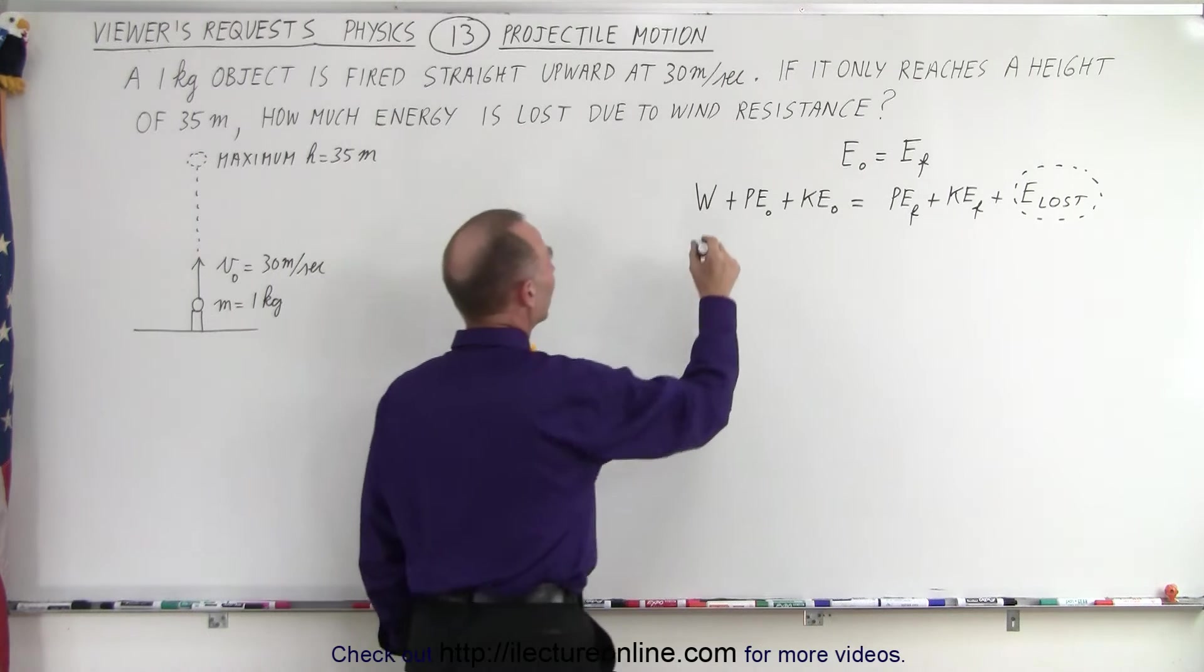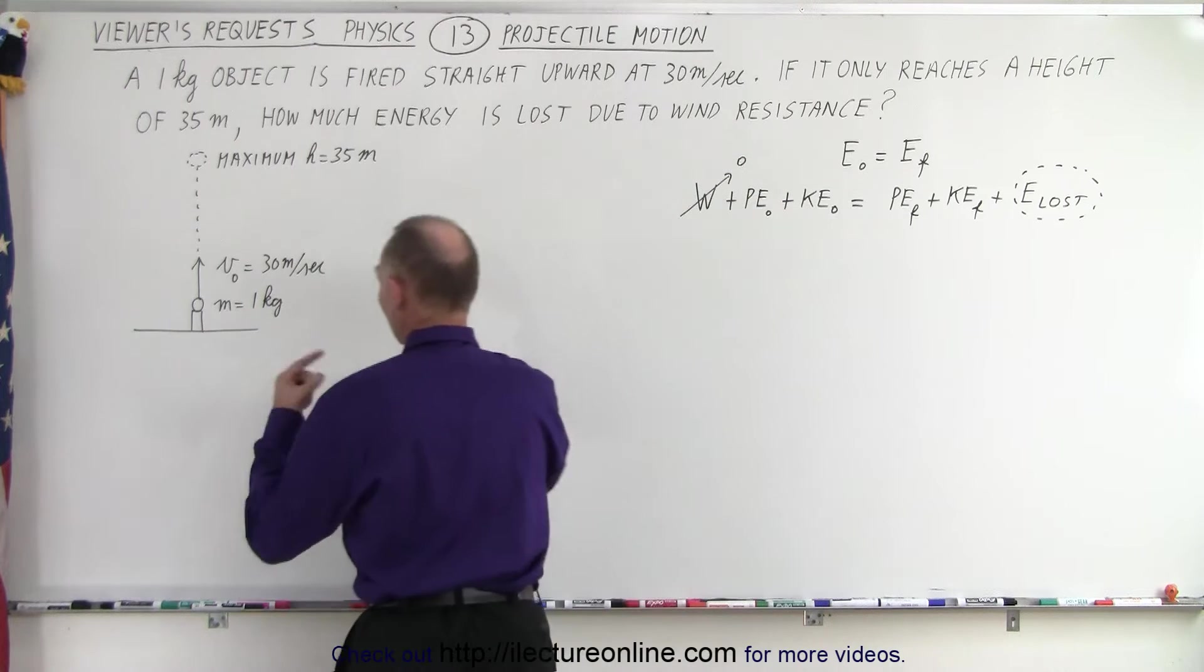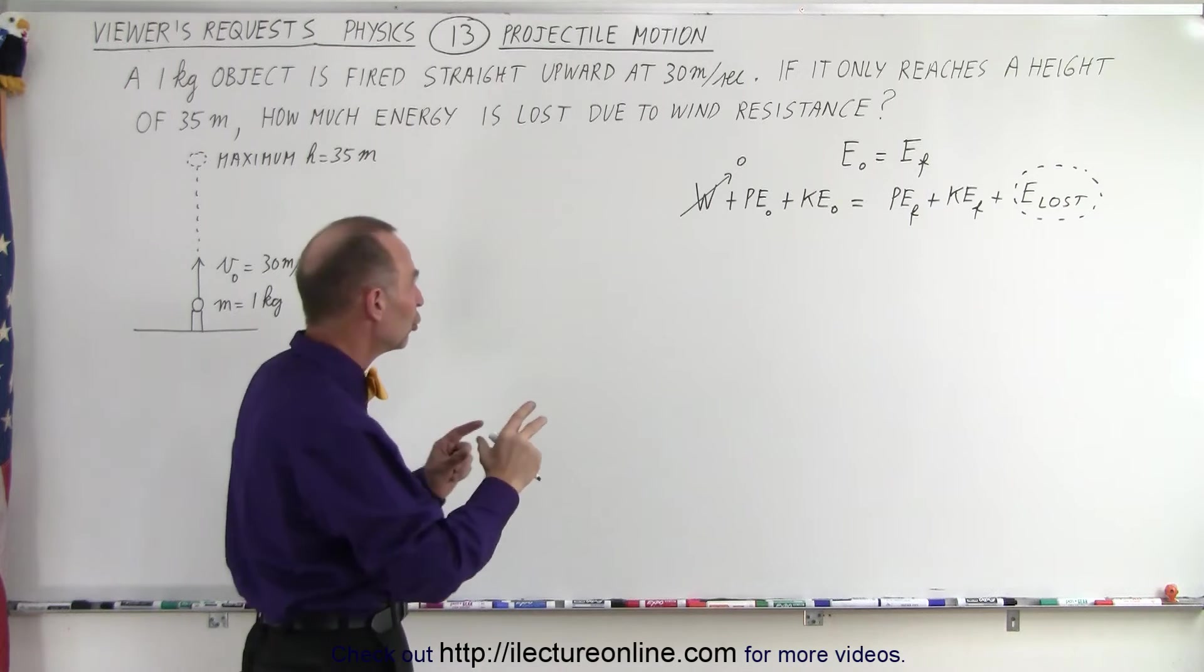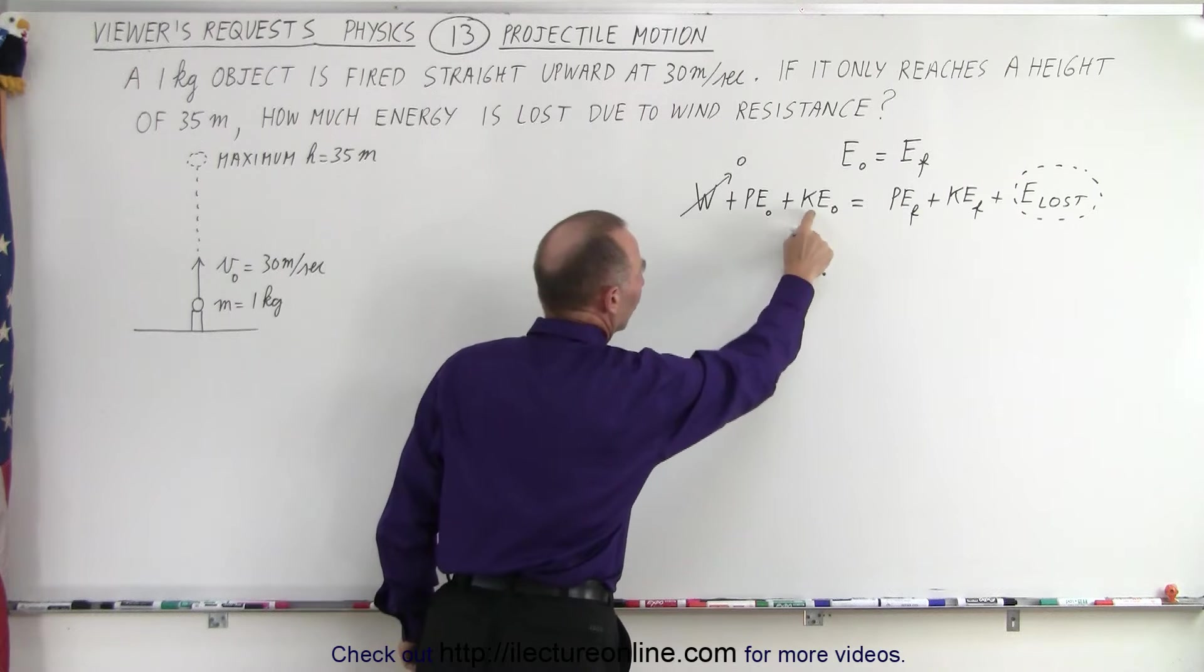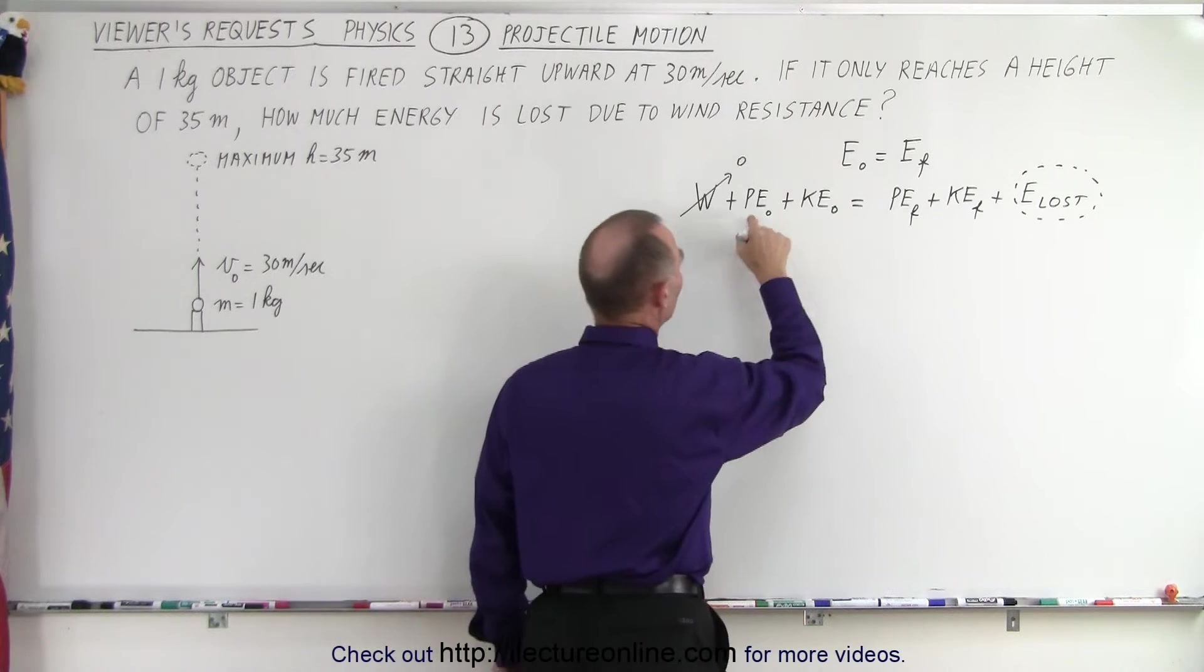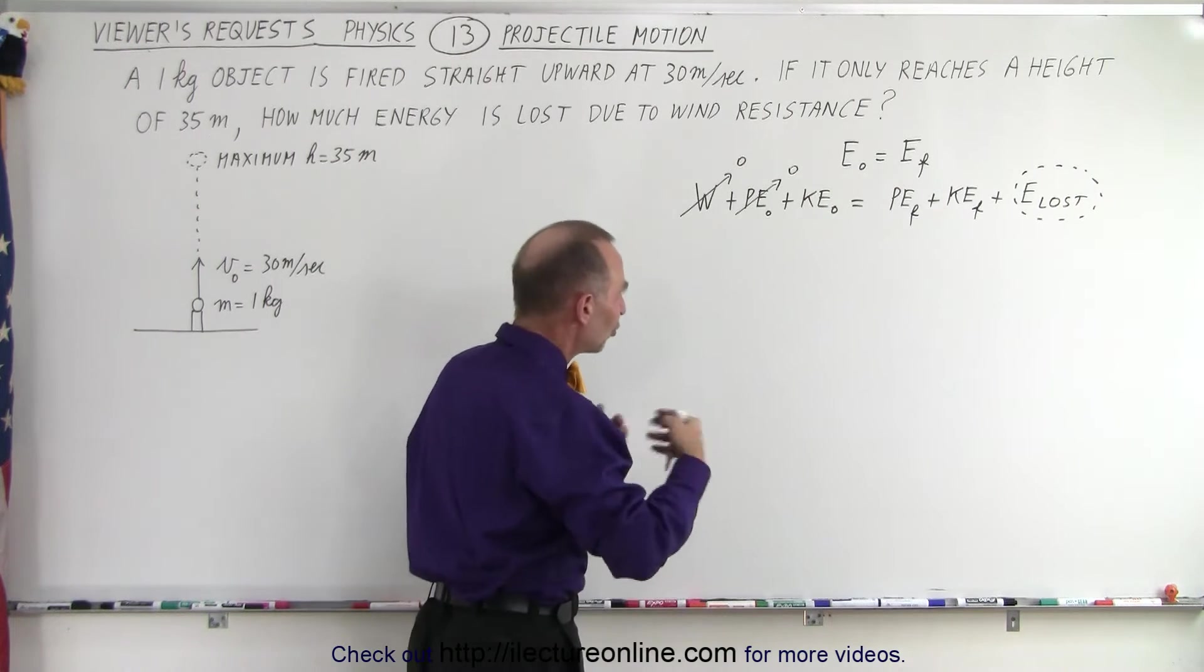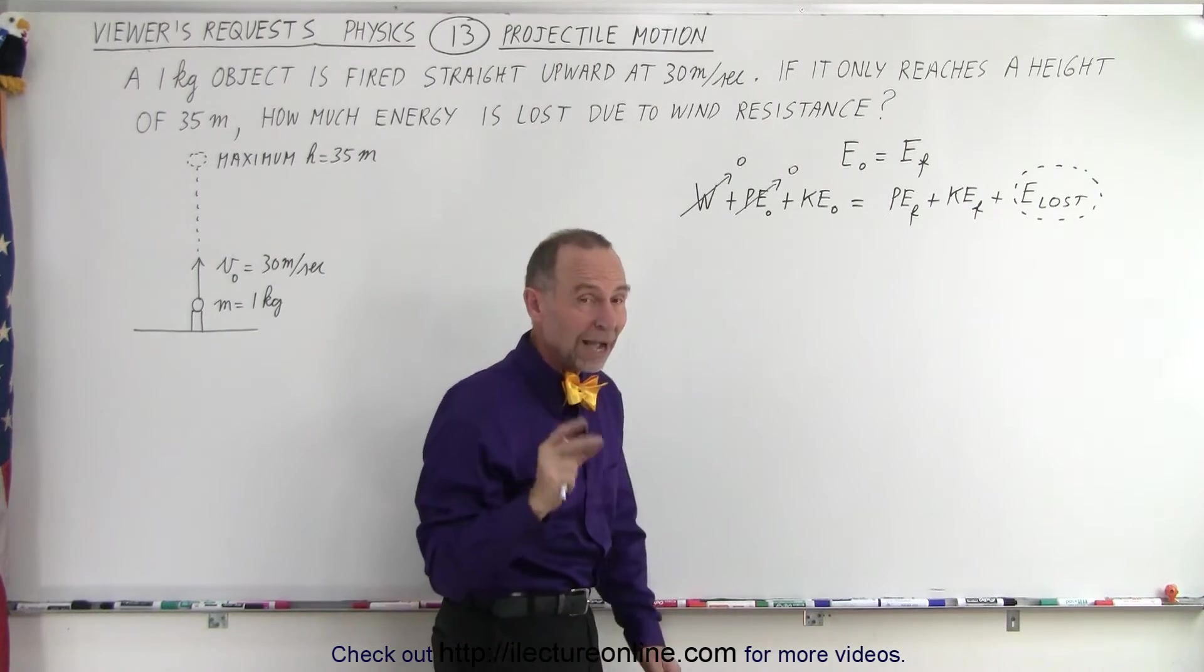Right away, we realize that there's no work put into the system. As soon as the object is fired, it will be given a certain amount of kinetic energy, so we don't have to include the work required to fire the object. We already have it accounted for in the kinetic energy. And since we're firing it from the ground, it will not have any potential energy when we start off, right? So we start from the ground, so there's no potential energy because there's no height at the ground.